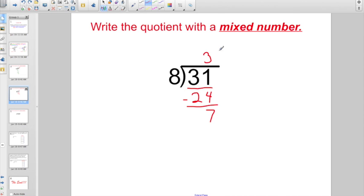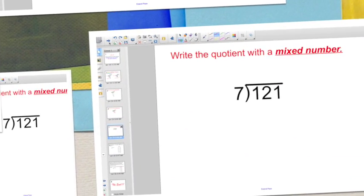So instead of saying remainder 7, 7 is going to be my numerator. And my divisor of 8 is going to be my denominator. 3 and 7/8.